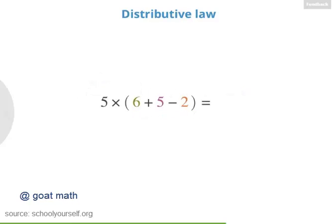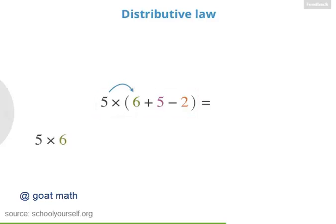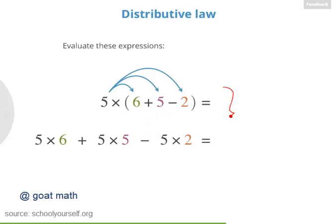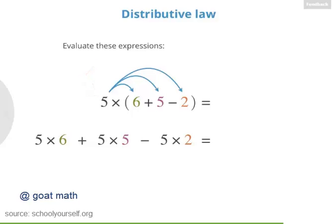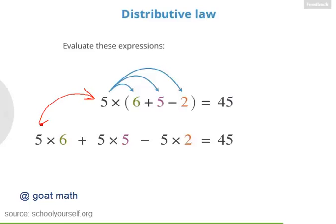Next, let's distribute onto 3 terms inside parentheses. Here we have 5 times (6 plus 5 minus 2). If we distribute, we have 5 times 6, plus 5 times 5, and then since we're distributing onto subtraction, we subtract 5 times 2. In the top expression, 6 plus 5 is 11, then subtracting 2 gives 9, and 5 times 9 equals 45. In the bottom expression, 5 times 6 is 30, 5 times 5 is 25, and 5 times 2 is 10. 30 plus 25 is 55, and subtracting 10 gives 45 again. Sure enough, these two expressions are equal.